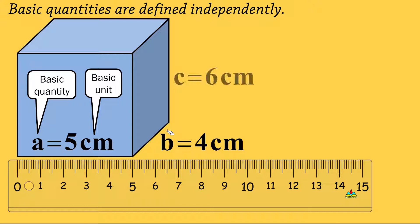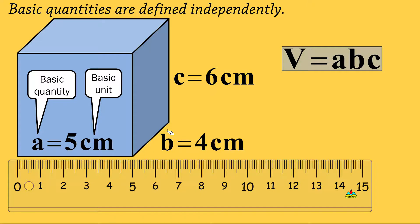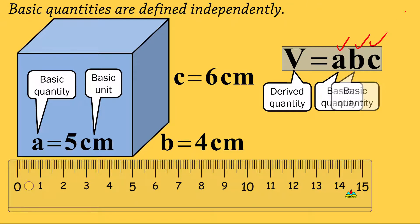Suppose I keep measuring the other sides and find b equals four centimeters and c equals six centimeters. Now it's time to find the volume. Volume is the product of the three sides — a, b, and c. Volume is named a derived quantity because I have derived it by an equation based on basic quantities. Multiplying the three basic quantities a, b, and c gives a derived quantity like volume.